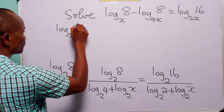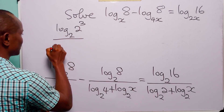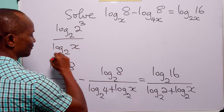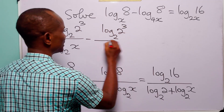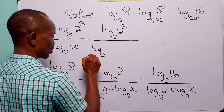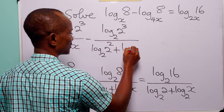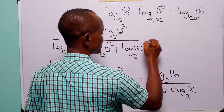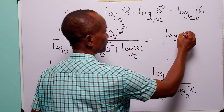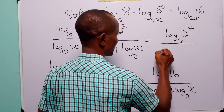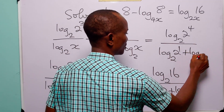Let us rewrite using the fact that 8 = 2³, 4 = 2², and 16 = 2⁴. The equation becomes: log base 2 of 2³ divided by log base 2 of x, minus log base 2 of 2³ divided by log base 2 of 2² plus log base 2 of x, equals log base 2 of 2⁴ divided by log base 2 of 2¹ plus log base 2 of x.